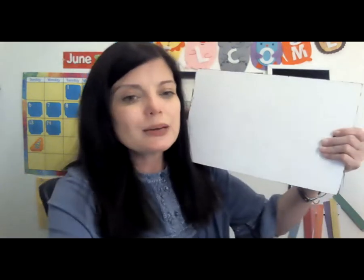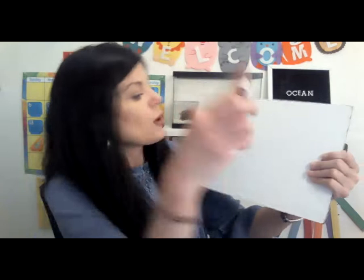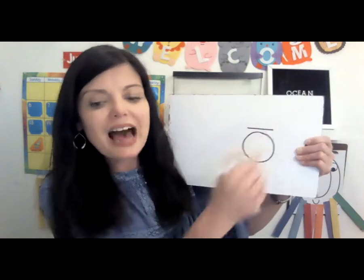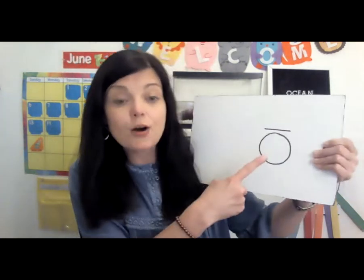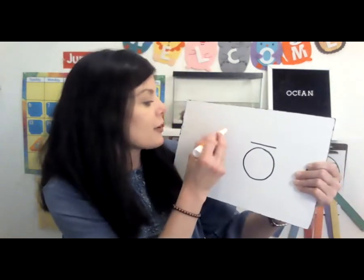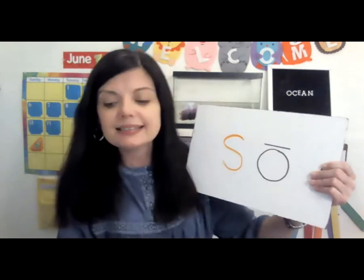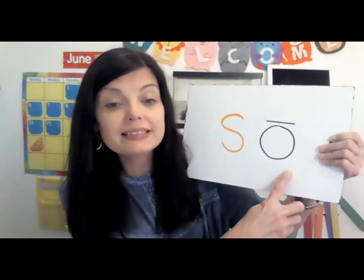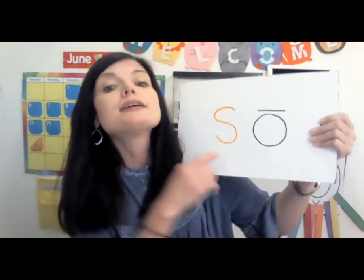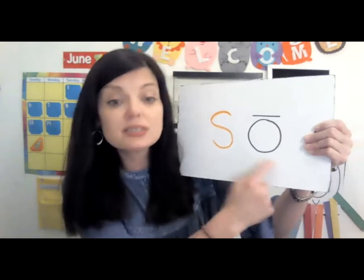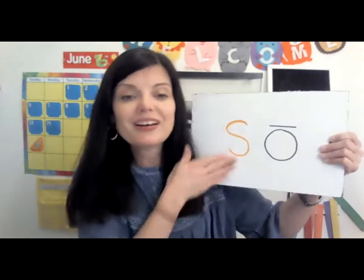And that's what we're going to talk about today for our language time — we're going to read some words with O. I'm going to write the letter O here and put a line on the top. This line tells me that this O is going to say O. In front of that, I'm going to put a letter S. Letter S says S like a snake. We're going to blend these two sounds together and read this word — so.